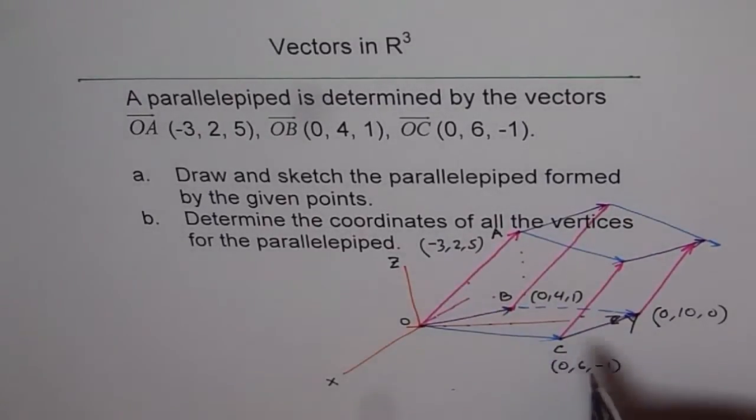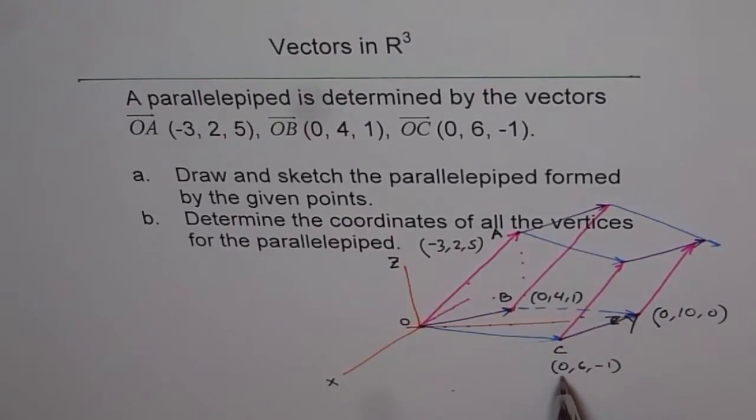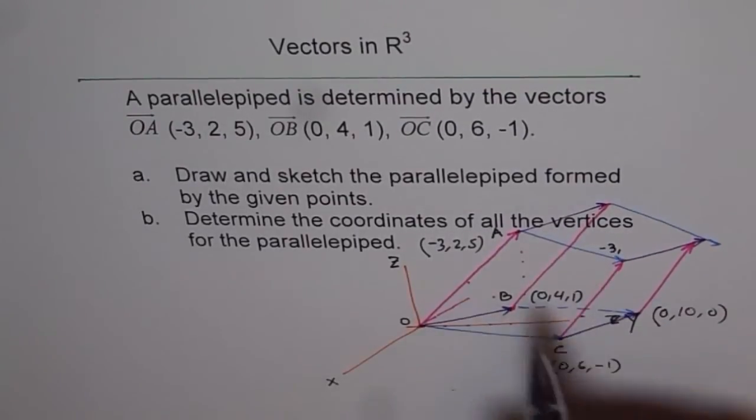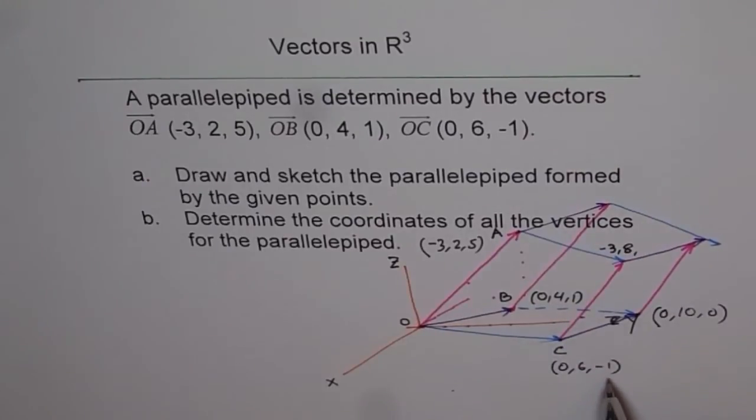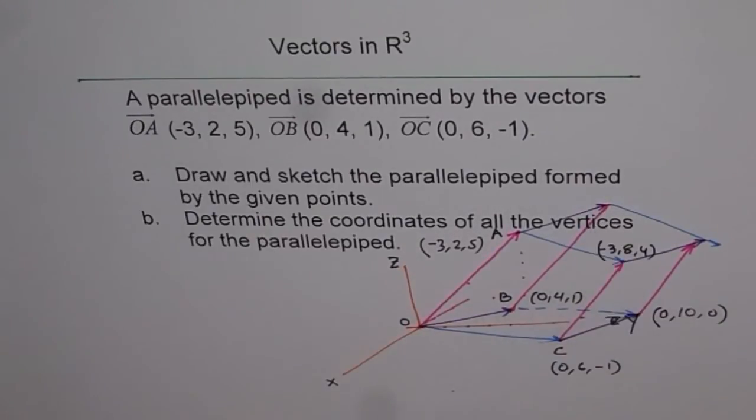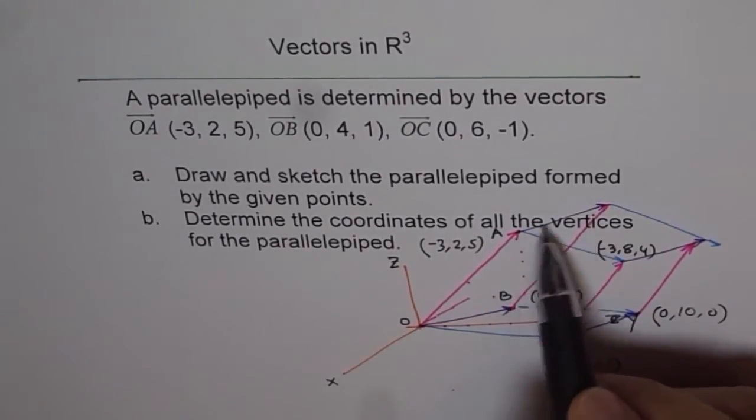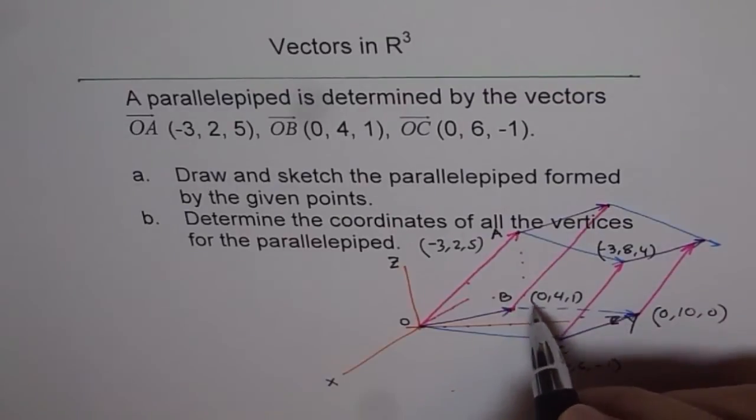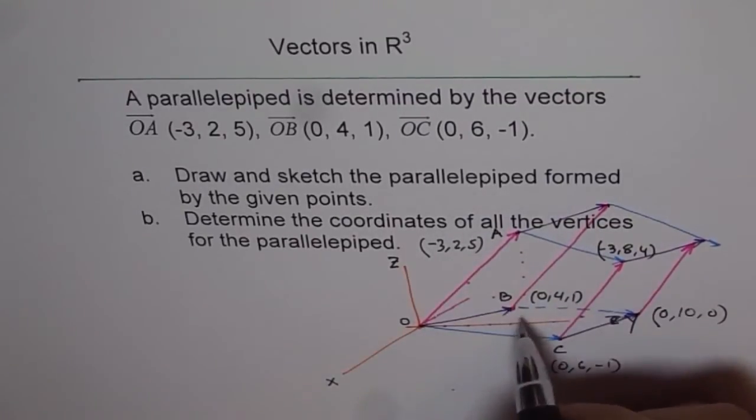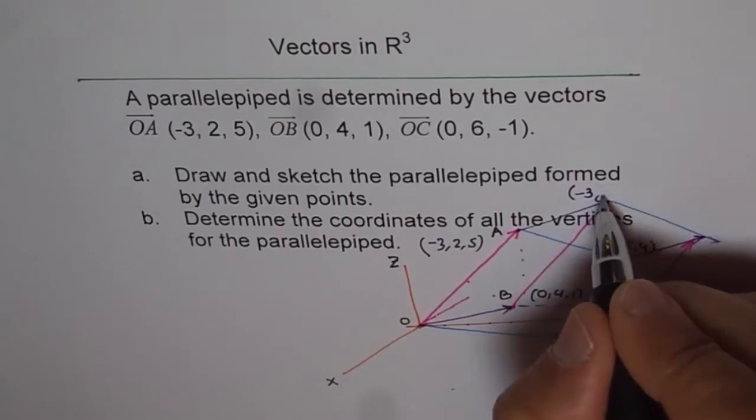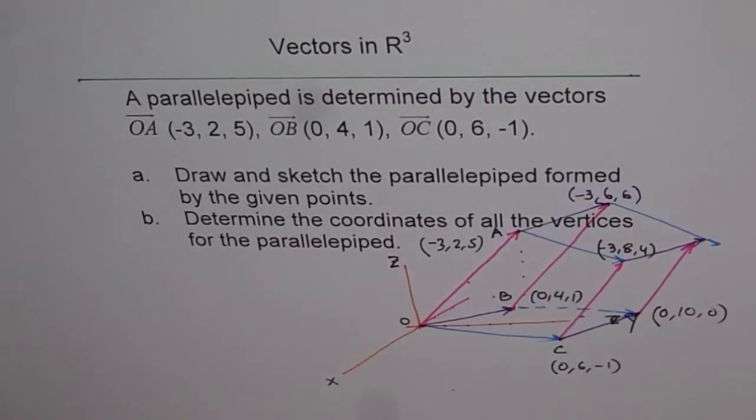If you have to go from here to here, then you have to add (-3, 2, 5). And you'll get this point. So to (0, 6, -1), add (-3, 2, 5). So it would be -3, and when you add 2 to 6, you get 8, and 5 minus 1 is 4. So you get this point. Similarly, if you have to find this point, then you have OA plus OB. So that point should equal, when we add OA to OB, it's -3 and 0 gives us -3, 2 plus 4 is 6, and 5 plus 1 is also 6.